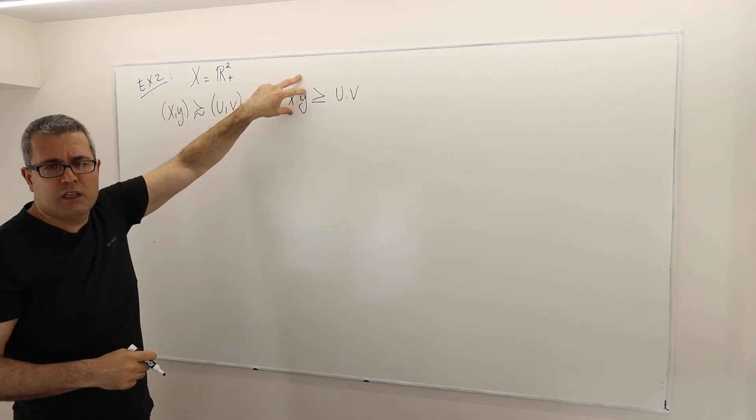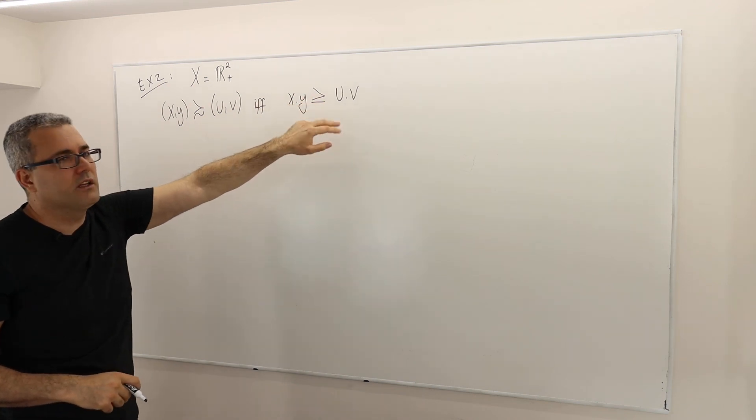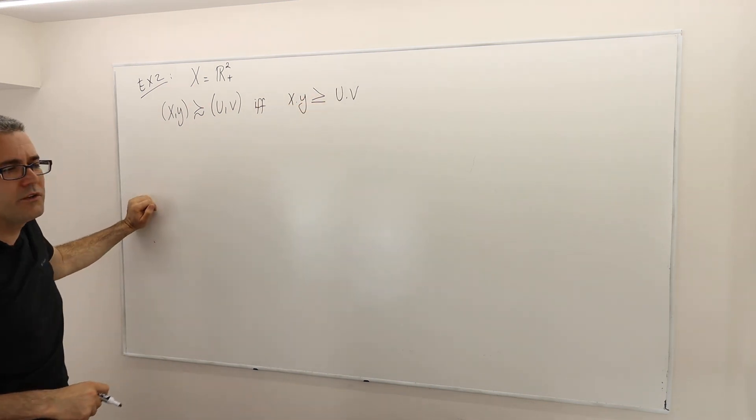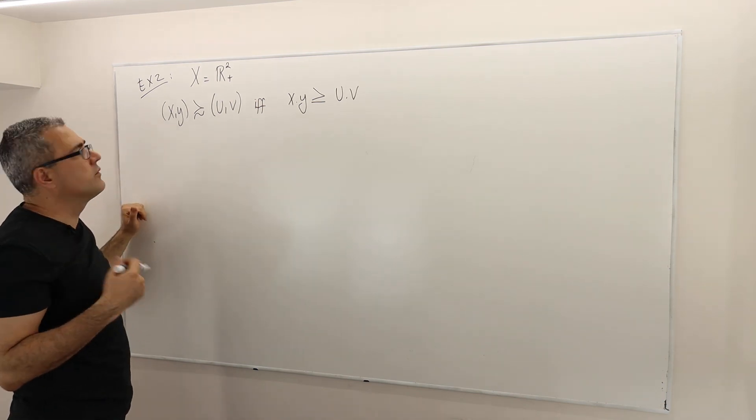this is just a real number, right? If the multiplication of this is greater than the multiplication of u and v, then I'm going to conclude that (x,y) is at least as good as (u,v).